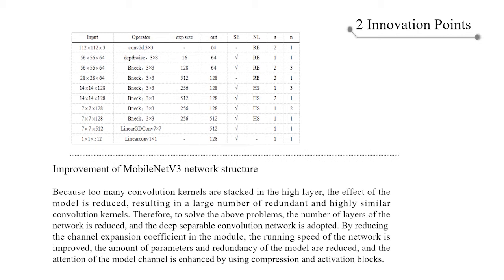In order to reduce the memory access of the network, the deep separable convolution network is adopted. By reducing the channel expansion coefficient in the module, the running speed of the network is improved, the amount of parameters and redundancy of the model are reduced, and the attention of the model channel is enhanced by using compression and activation blocks.